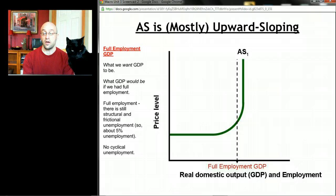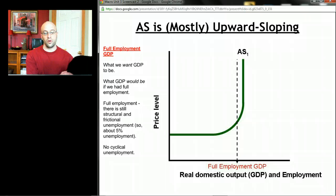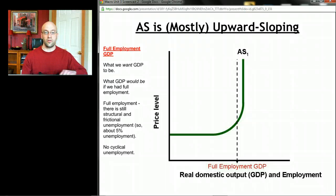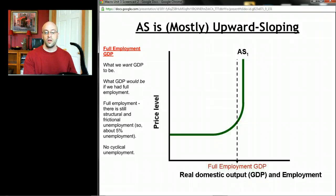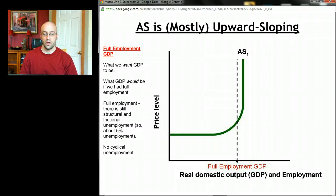Remember, full employment doesn't mean every single person is working. We're always going to have structural unemployment and frictional unemployment, so we'll always have around five to six percent unemployment — we call that the natural rate of unemployment. But at this level of GDP, there's none of the bad kind of unemployment — none of that cyclical unemployment, the unemployment that happens when the economy is tanking, when we're in a recession. Everything else on the aggregate supply curve is in relation to this one magical point in the graph.